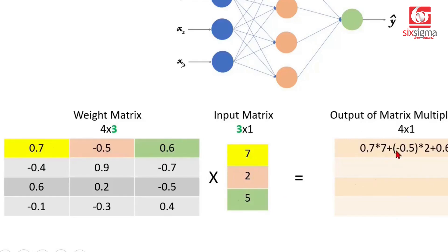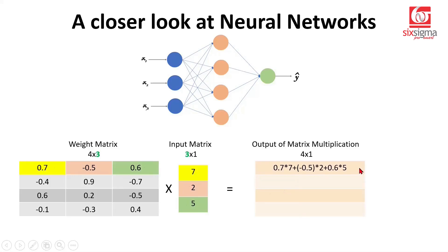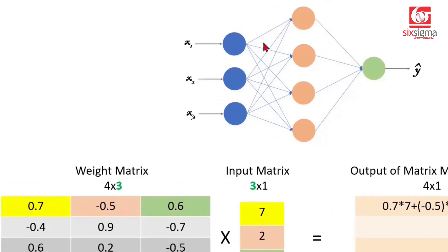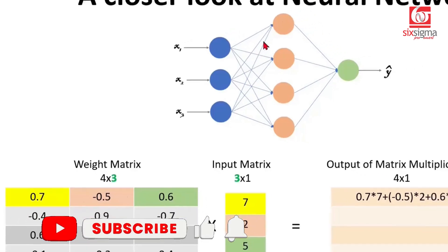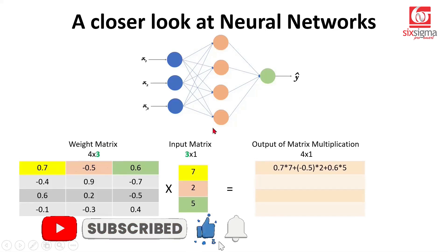So finally, you will get this kind of an outcome. Now realize what is happening here. What is this row representing? These weights are corresponding to the connections going to the first neuron of the hidden layer. The first one is 0.7. The second one is negative 0.5 and this one is 0.6. What happens at a neuron? We multiply the weights with the inputs and do an aggregation. That's what we are doing through matrix multiplication.